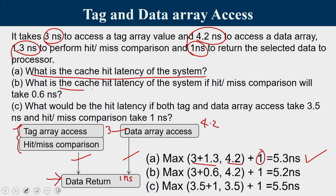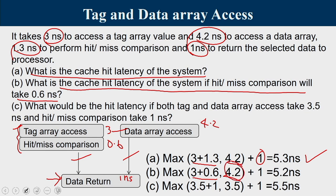For the second case, hit/miss comparison time is reduced to 0.6ns. Left side: 3 + 0.6 = 3.6ns. Right side: 4.2ns unchanged. Now the right side (data array access) is dominant at 4.2ns. Hit latency = 4.2 + 1 = 5.2ns. Even though the left side was reduced, there's minimal benefit because the right side data array access is still the dominant factor.